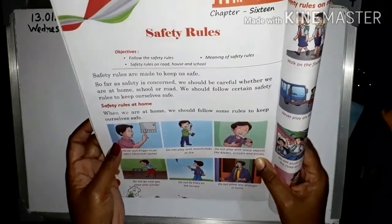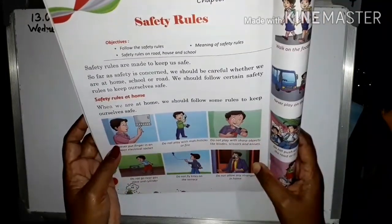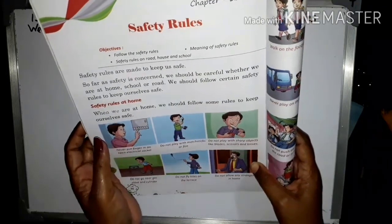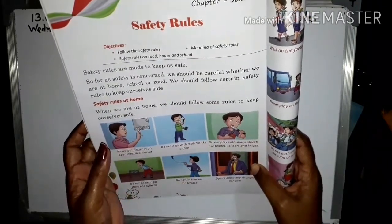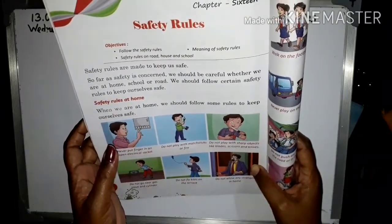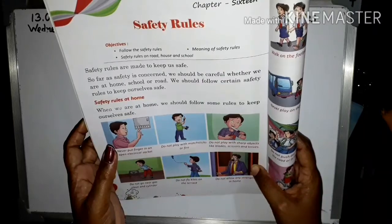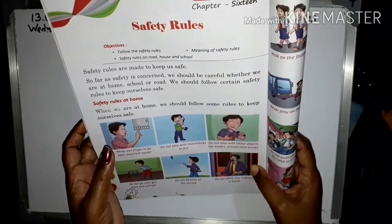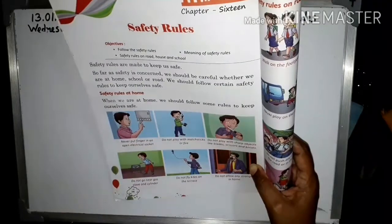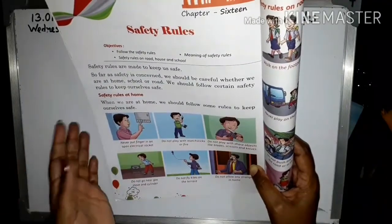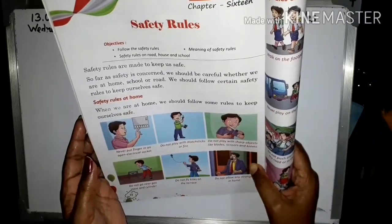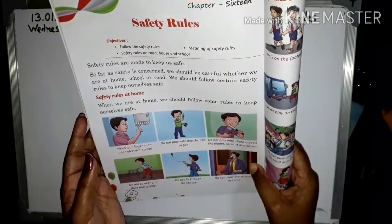Do not fly kites on the terrace. Terrace क्या है — छत। आप लोग खुली छत पर कभी kite — जिसको पतंग बोला जाता है — नहीं उड़ाना चाहिए। Ground में या playground में उड़ाएं — वहाँ कोई हानि नहीं। Terrace पर गिर सकते हो।